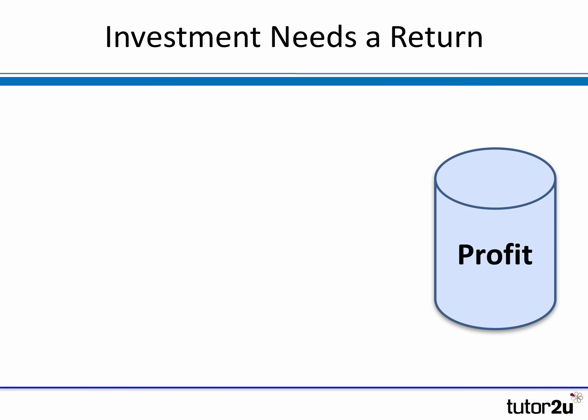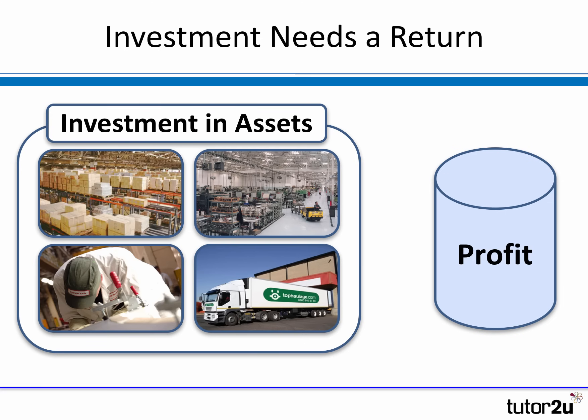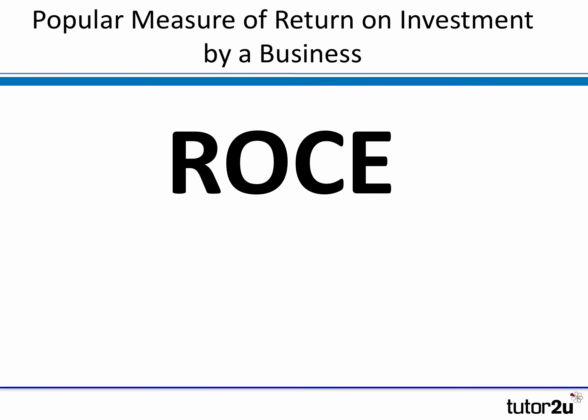In order to earn a profit, most businesses have to invest — in inventories, stocks, warehouses, and maybe production facilities if they're involved in manufacturing. Other businesses not involved in manufacturing still need to invest in distribution capabilities, for example if they're a retailer. The key point about Return on Capital Employed is that it's a useful way of measuring the relative return — i.e. profit — on the amount that is invested in the business.